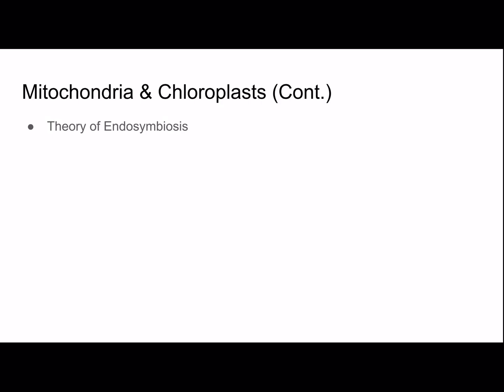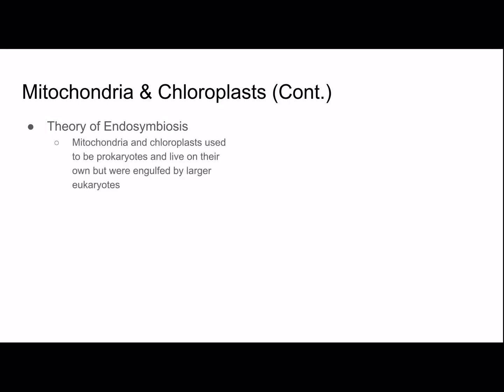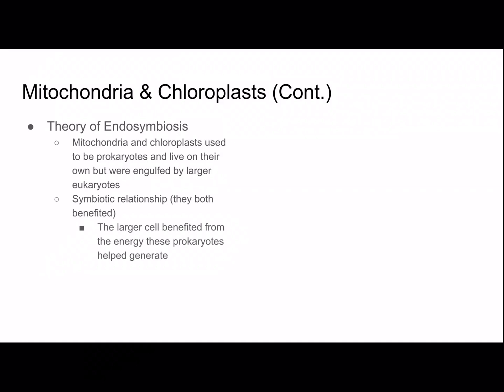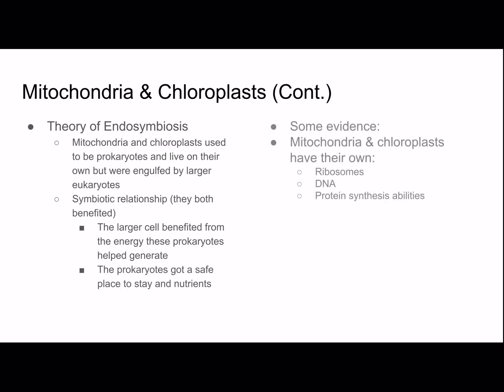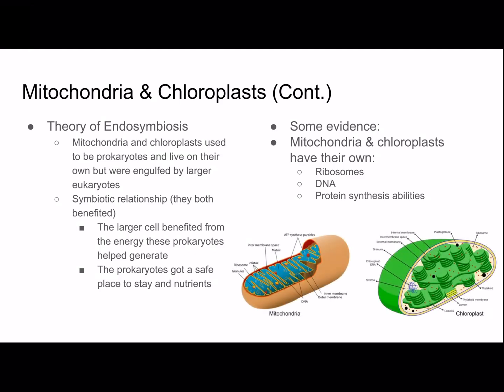The reason I grouped these two together is because they do energy processes and because of the theory of endosymbiosis — that mitochondria and chloroplasts used to be prokaryotes that lived on their own, but they were engulfed by larger eukaryotes. They then had a symbiotic relationship, meaning both benefited: the larger eukaryote benefited from the energy that these prokaryotes helped generate, and the prokaryotes got a safe place to live with no predators and nutrients from the cell. Some evidence: mitochondria and chloroplasts each have their own ribosomes, DNA, and protein synthesis abilities, as you can see in the picture.